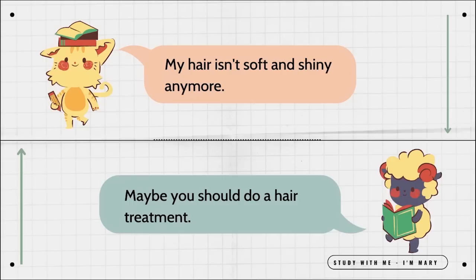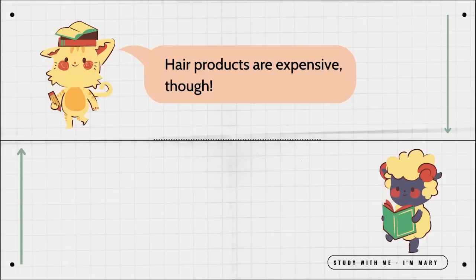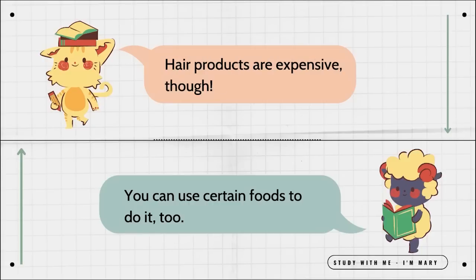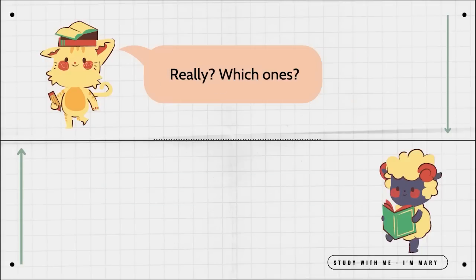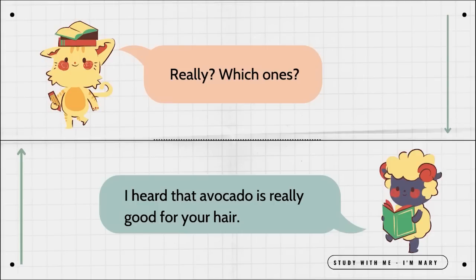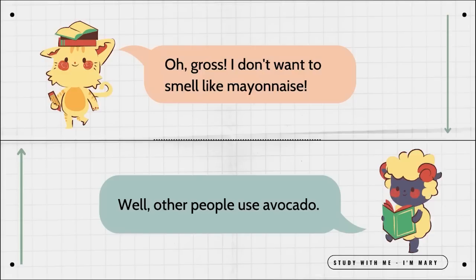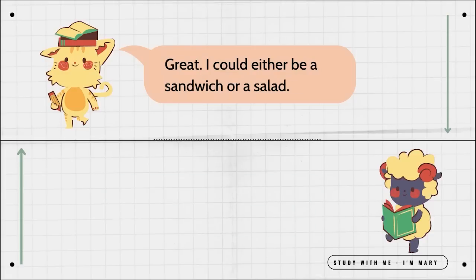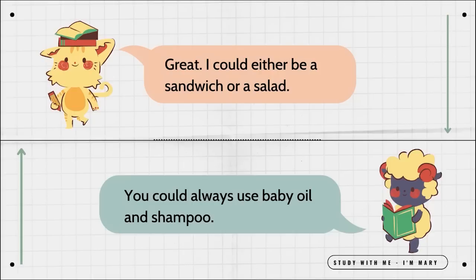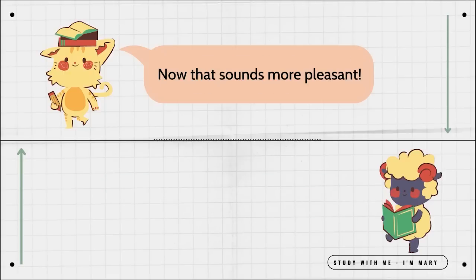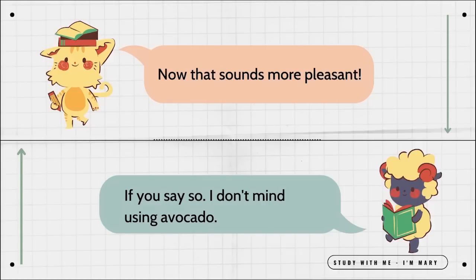My hair isn't soft and shiny anymore. Maybe you should do a hair treatment. Hair products are expensive, though. You can use certain foods to do it, too. Really? Which ones? I heard that avocado is really good for your hair. Oh, gross! I don't want to smell like mayonnaise. Well, other people use avocado. Great! I could either be a sandwich or a salad. You could always use baby oil and shampoo. Now that sounds more pleasant. If you say so, I don't mind using avocado.